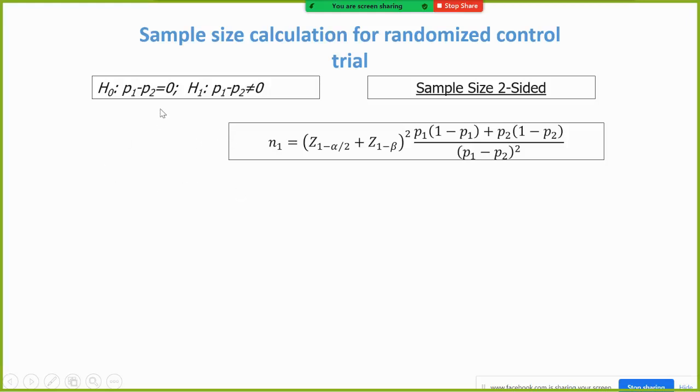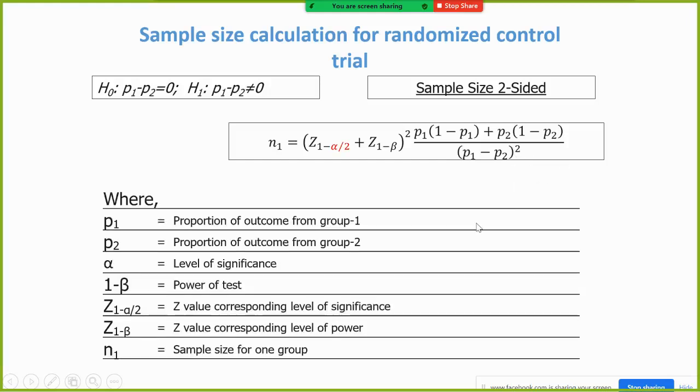This is called the sample size for two-sided. For this hypothesis as well as for this study design, the sample size calculation is n1 equal to the function of the z value and function of proportion value, where p1 is the proportion of outcome from one group, that means either treatment or control.